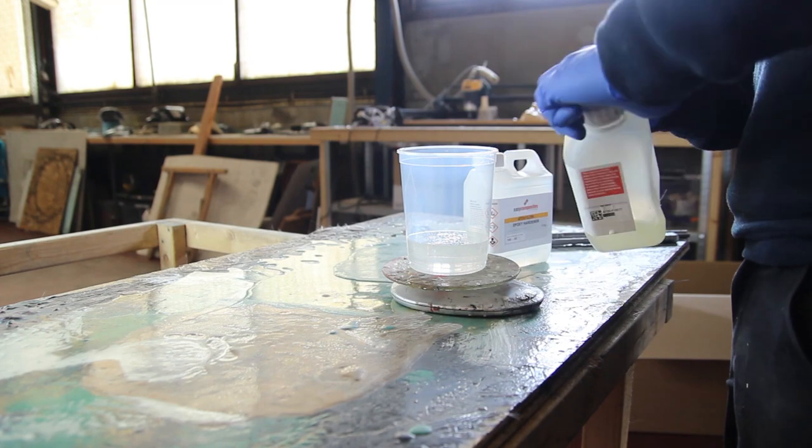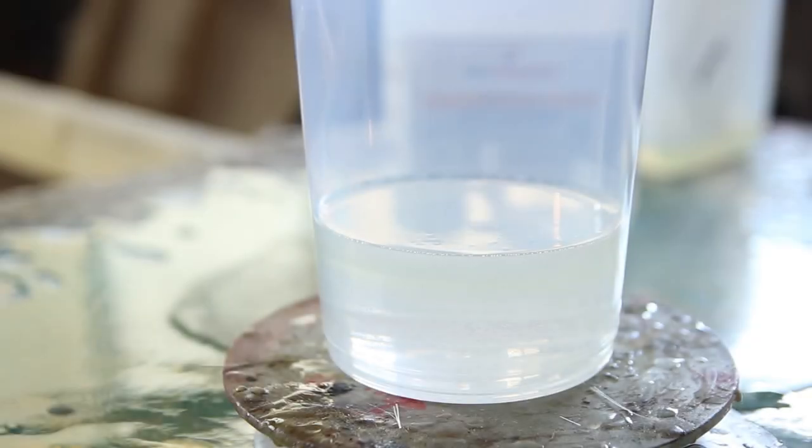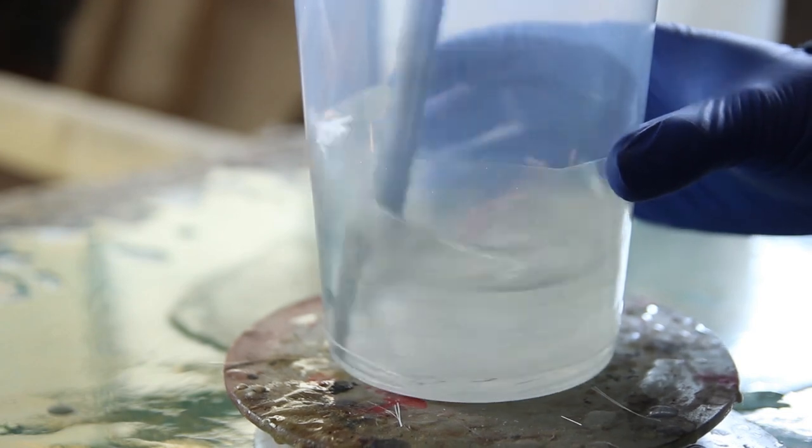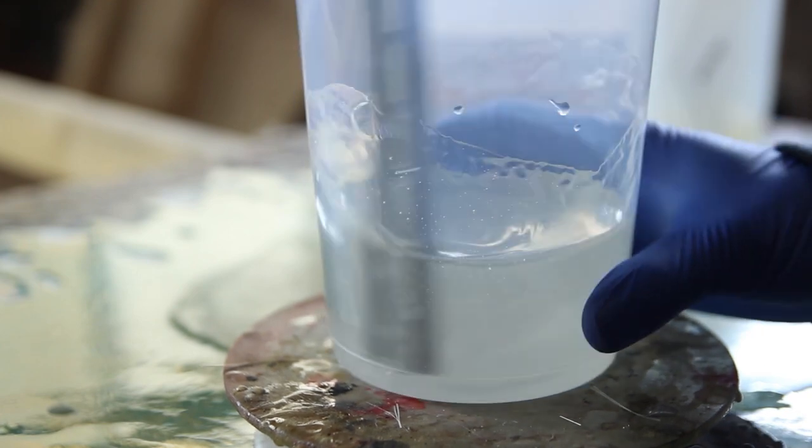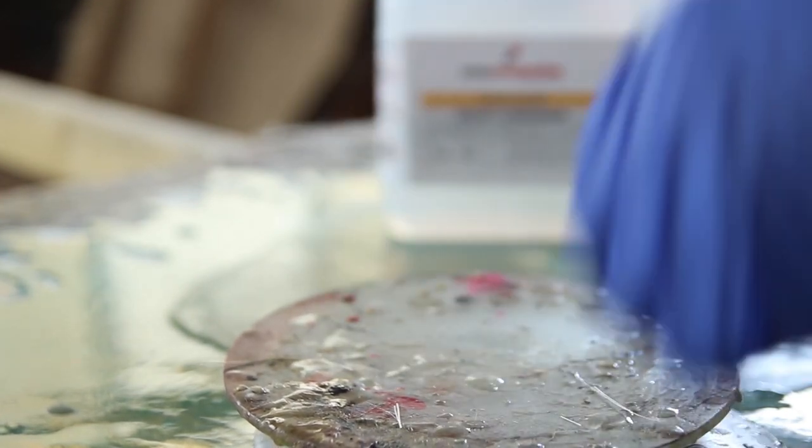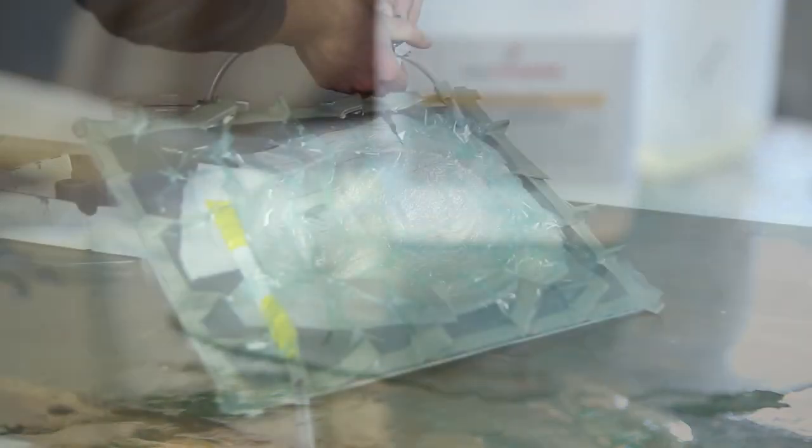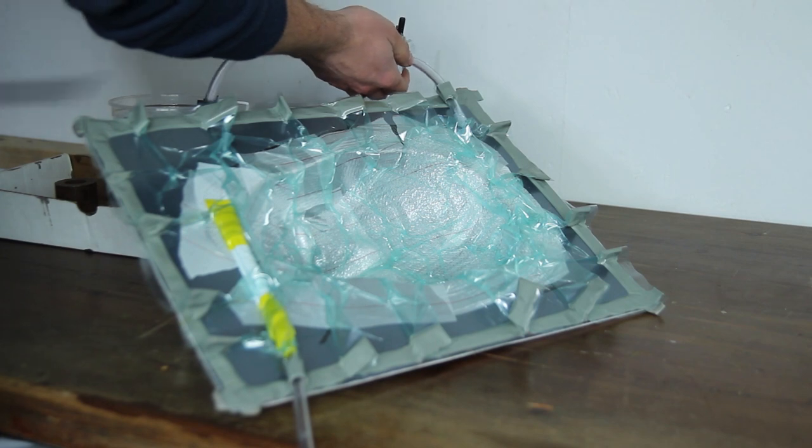So here we're preparing the resin. So I'm using a mixture of the slow and fast hardener from Easy Composites combined with the IN2 epoxy resin, and then it's just a matter of mixing it well. So I would go about two minutes and then make sure that the bubbles, the rough bubbles, are coming out of the cup. So just by leaving it for 10 minutes and then you're ready for the resin infusion.